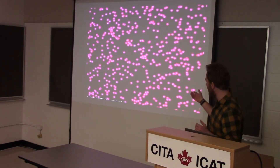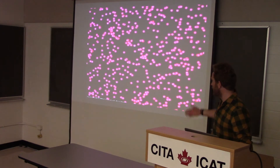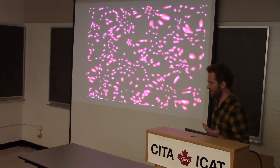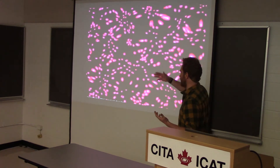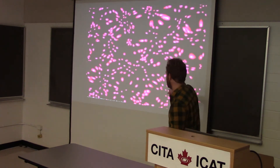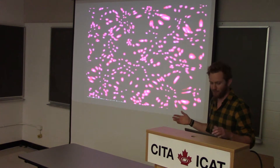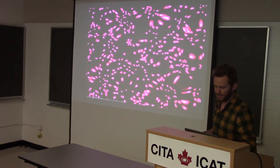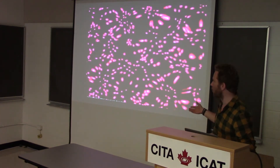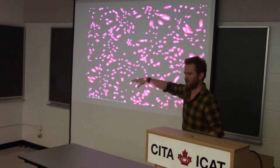Weak lensing: here are some galaxies, and if I put some matter between us and those galaxies, you see distortions like this. You can infer properties of the intervening matter by looking at correlations in the shape distortions. That's all you need to know about weak lensing for the purposes of this. As I said, dark energy can be measured because it affects what's going on here.